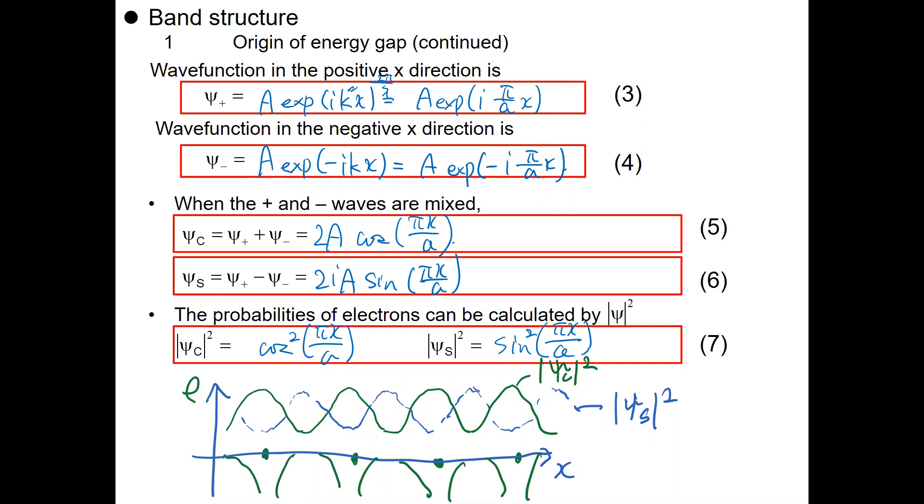I would like to remind you that if you take this part at x equals zero, psi c squared has the density maximum at the positive lattice position. At every positive lattice position, psi c squared has the maximum density. On the other hand, psi s squared is a sine term, and has the minimum at the positive charge positions, and in between here it takes the maximum. It's kind of the opposite trend of the wave function electron density.